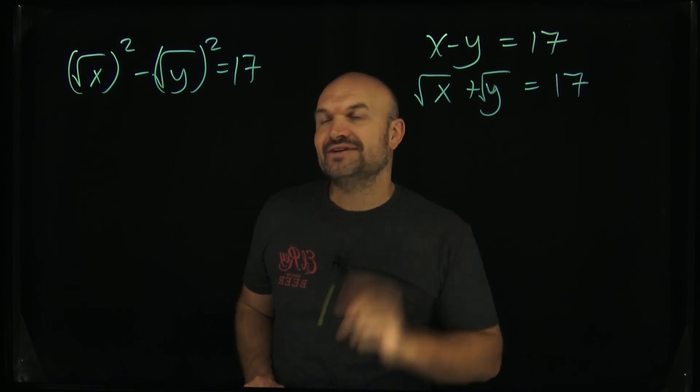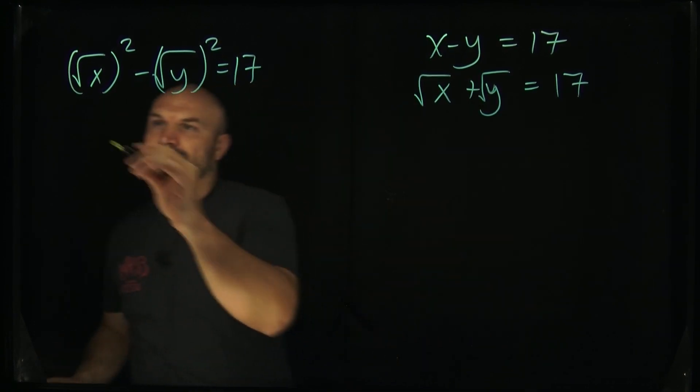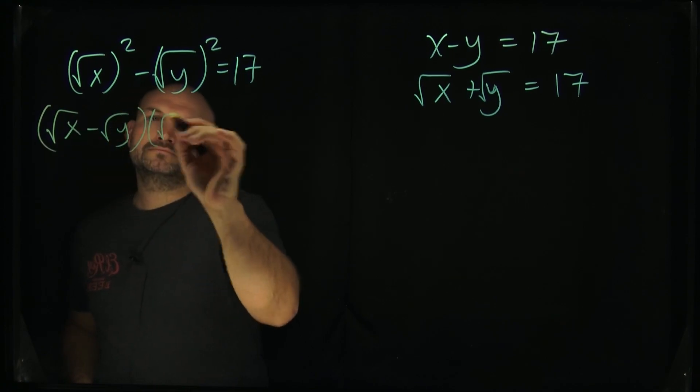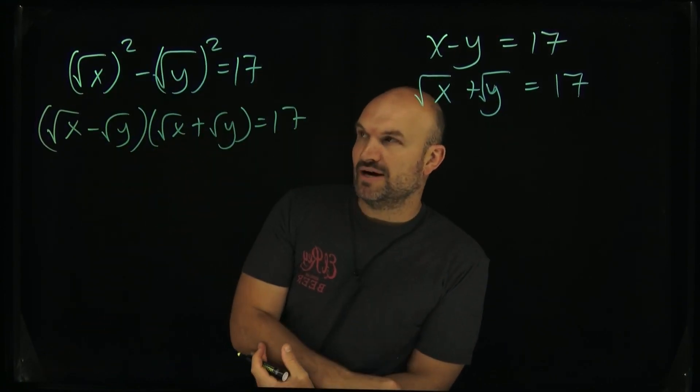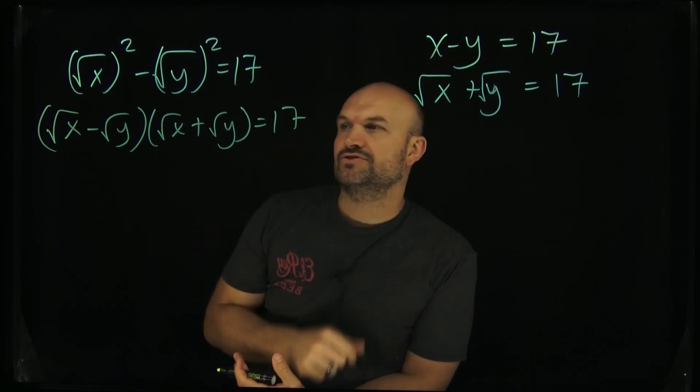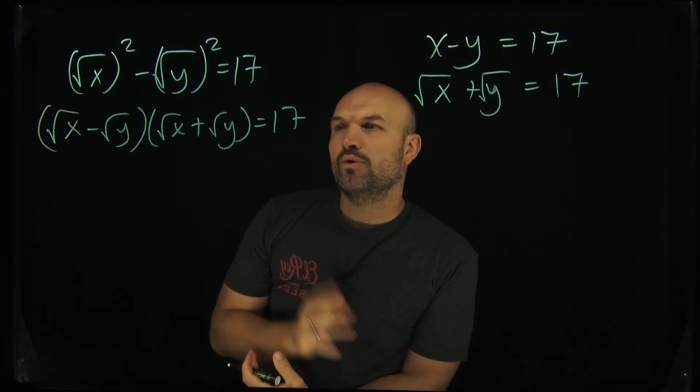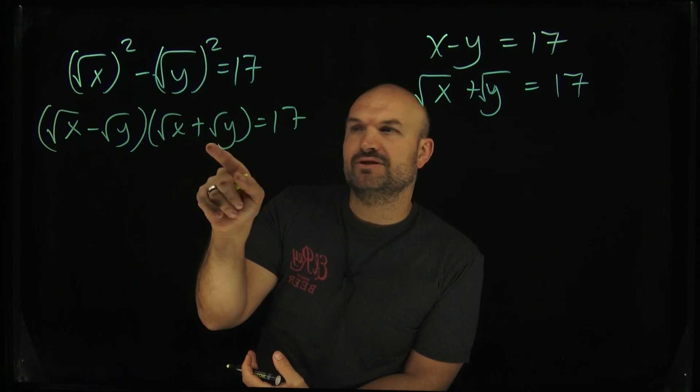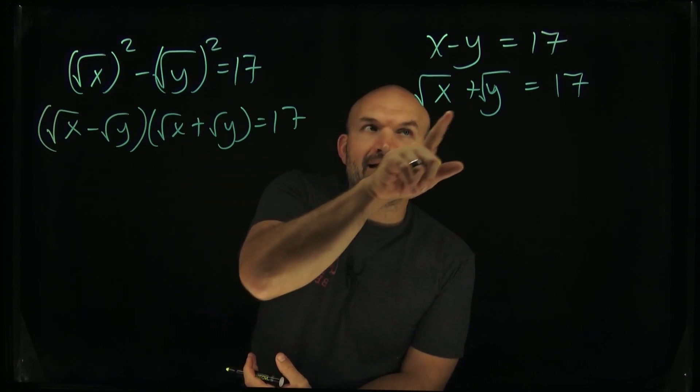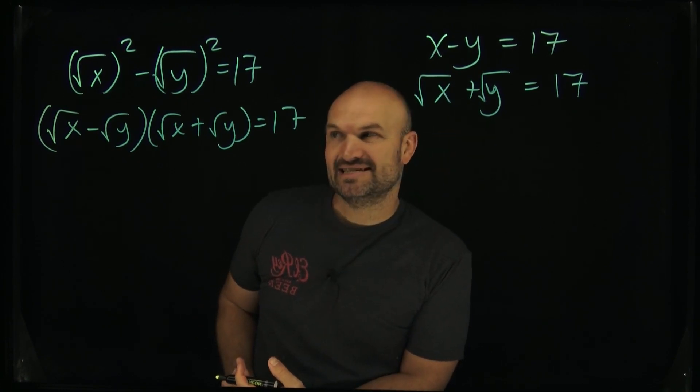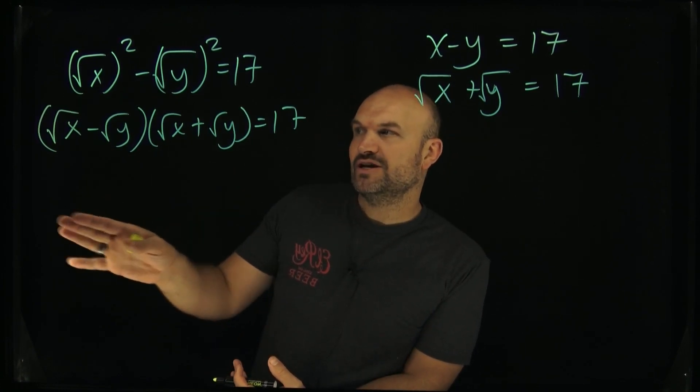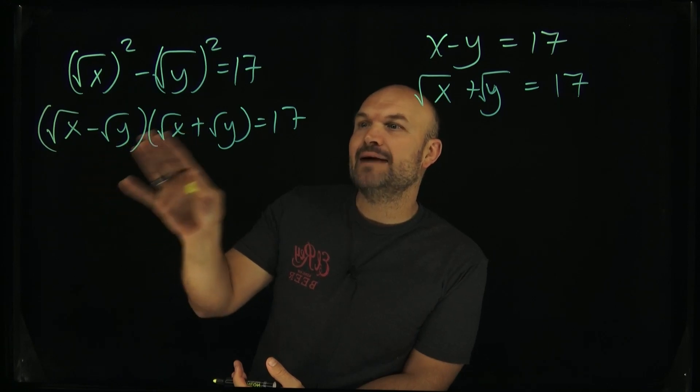Now when I apply the difference of two squares, something else is going to happen that's pretty important. I just applied the difference of two squares here—it's still going to equal 17. The reason that's important is because we know that √x + √y is going to equal 17.